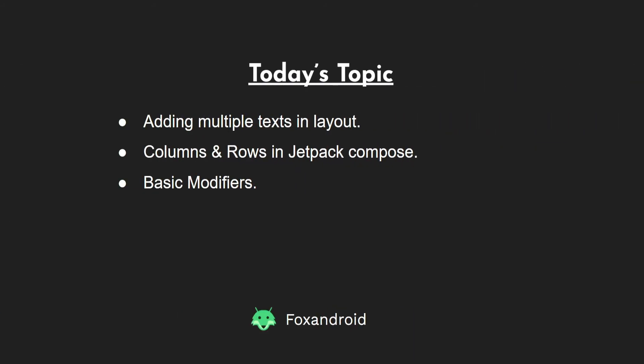In this video we'll be learning how to add multiple texts in the layout. In the last video we were adding only one string into our layout, so if we're adding 10 strings or different texts, how do we do that? What are columns and rows in Jetpack Compose, and what are the modifiers for these columns and rows? We'll discuss the first two things in detail and get a basic idea of modifiers, since we'll be covering modifiers in depth in the next video.